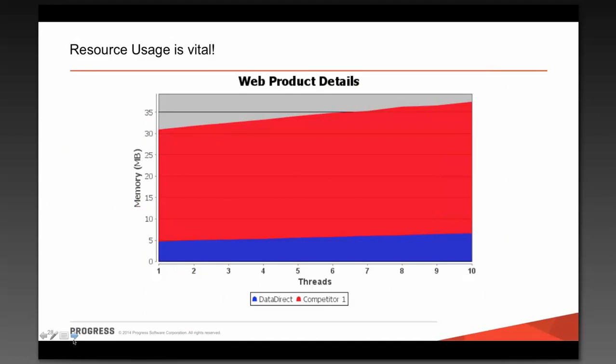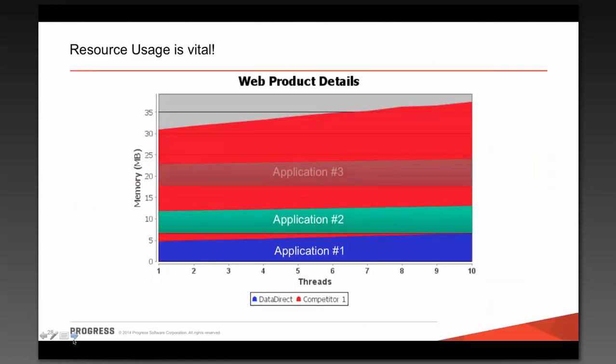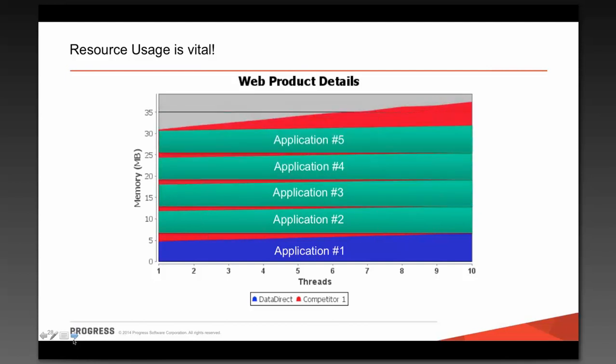Once we design these drivers, we have to measure them — you can't improve anything that you can't measure. This is an example of one of the graphs we generate out of our performance lab. On the bottom, the number of threads from one to ten; the amount of memory being consumed in megabytes on the left from zero to 35 meg. Our driver is fairly consistent in the blue, and our competitor was using a lot of memory and has improved over time. When we saw this slide, the first thought was: how many of our drivers could we run in the same memory space as our competition? We think we can get about five and still consume less memory.